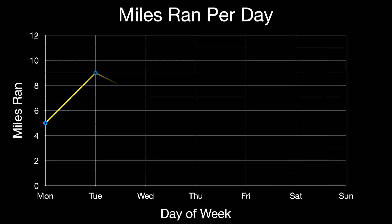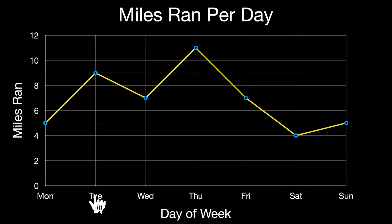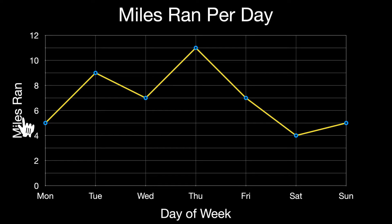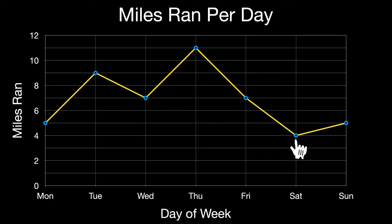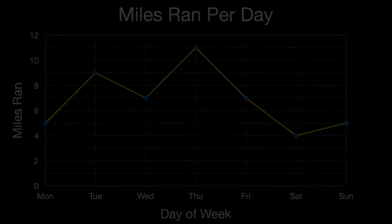A time series graph or a line graph shows how something changes over time. Typically on the x-axis you'll have some type of time — here we have days of the week — and on the y-axis we have the number of miles ran. We can see that Thursday is when the most miles were ran, and Saturday was when the least miles were ran. So this time series graph or line graph shows how something changes over time.